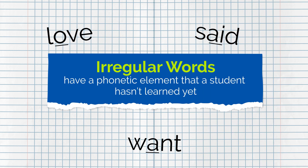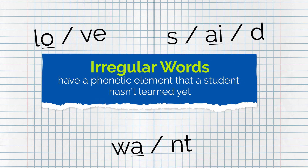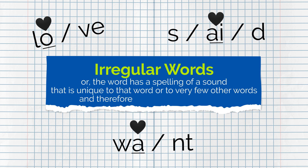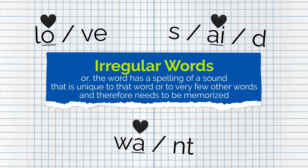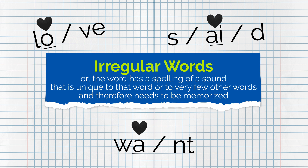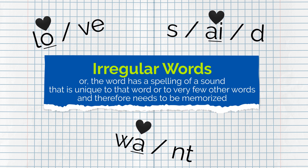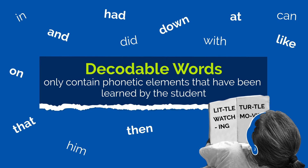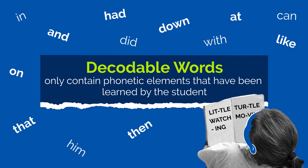Irregular words have a phonetic element that a student hasn't learned yet, or the word has a spelling of a sound that is unique to that word or very few other words, and therefore it needs to be memorized. Decodable words only contain phonetic elements that have been learned by the student.